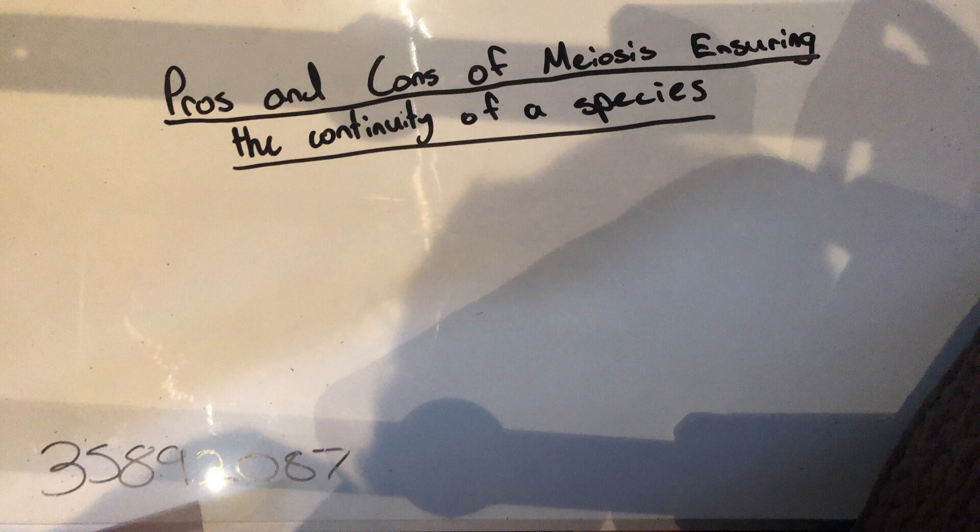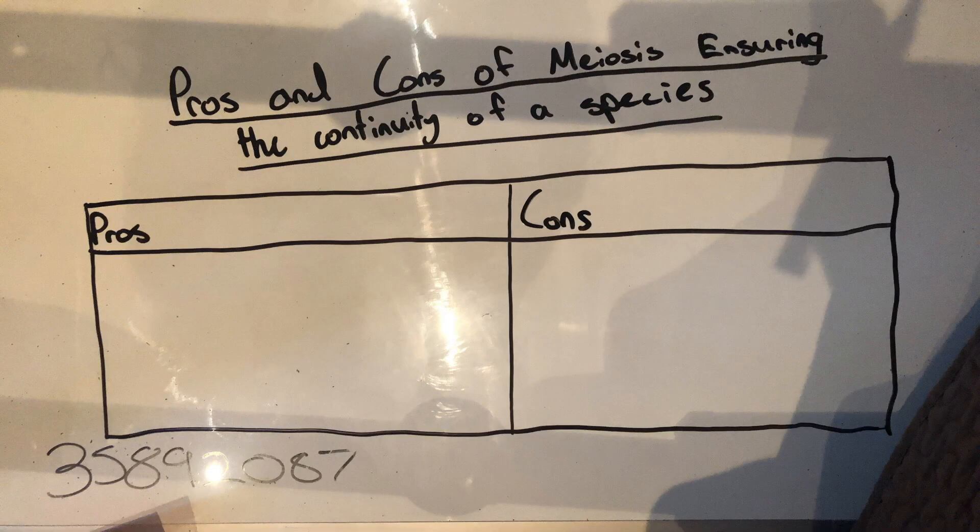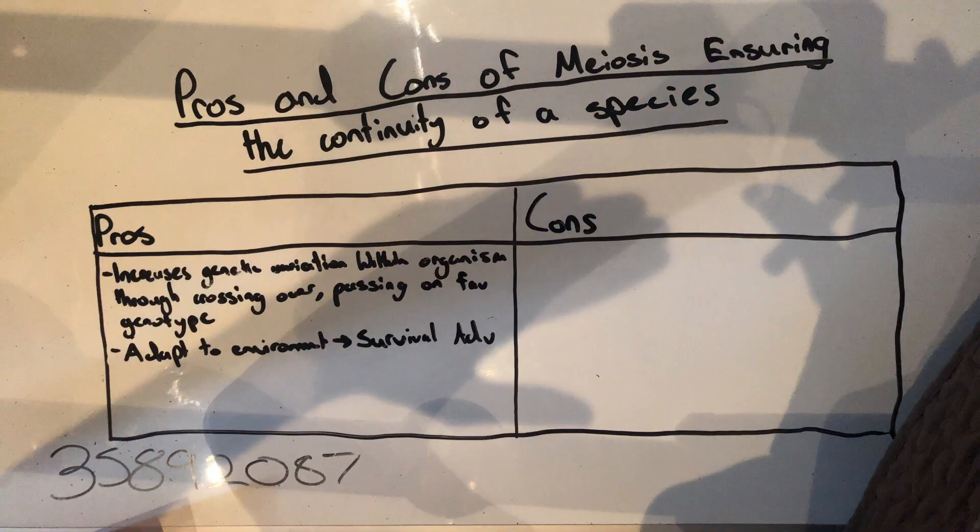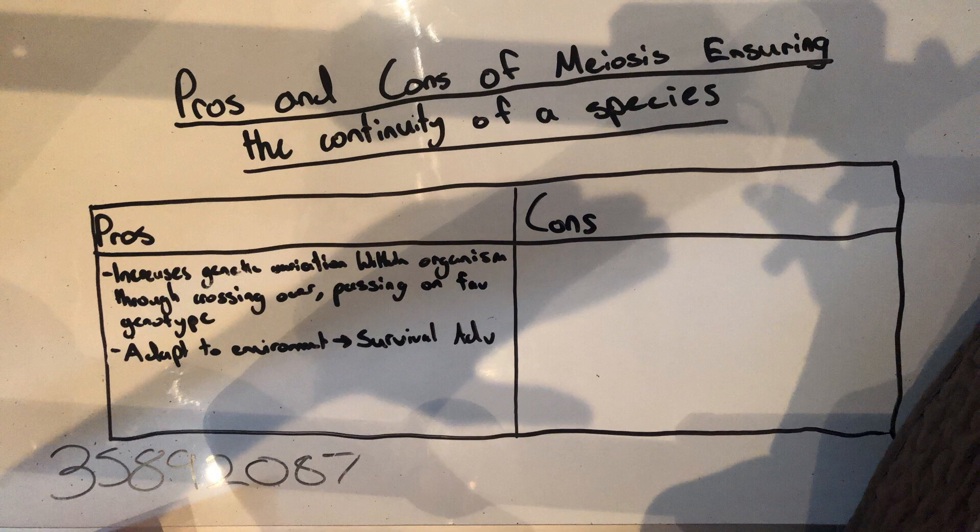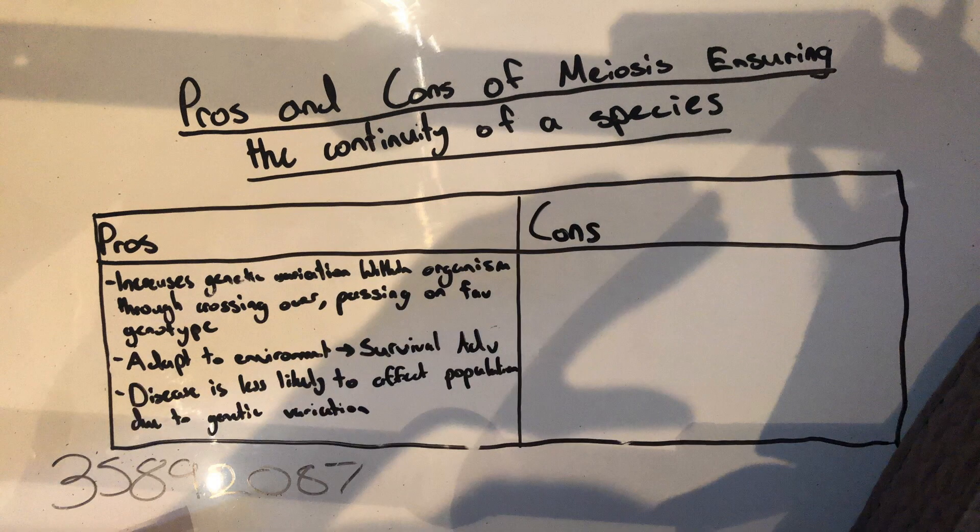Pros and cons of meiosis ensuring the continuity of a species. Pros: the increase in genetic variation through the use of crossing over. The species can adapt to new environments due to the variation, giving them a survival advantage. Diseases are less likely to affect the population due to genetic variation.